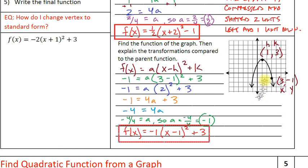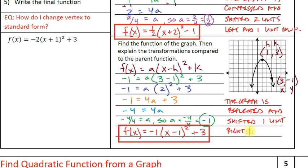Now let's describe the transformations. a is negative 1 — not stretched or compressed because the absolute value is 1, but it is negative, so the graph is reflected or pointing down compared to the parent graph. The vertex has shifted one unit right because h is positive 1, and three units up because k is positive 3.